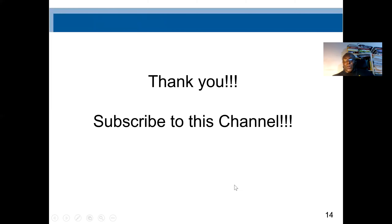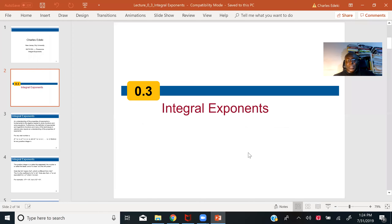This is the end of our exponent rules — a very short lecture. The most important things are the major five rules: when bases are the same and multiplied, add the exponents; for division, subtract. Anything raised to the power of 0 is always 1. When an exponent is raised to another exponent, we multiply. Wishing everybody the best, and I'll see you all in the next video.